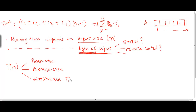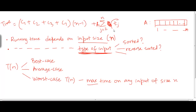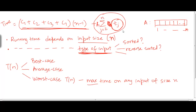The worst case T(n) is simply going to be the maximum time on any input of size n. For the insertion sort algorithm, if we want to maximize this running time, t_j should be as large as possible. The constant terms are not going to depend on the type of input, but t_j is going to depend on the type of input. If the input is reverse sorted, we know that t_j is going to be equal to j minus 1.